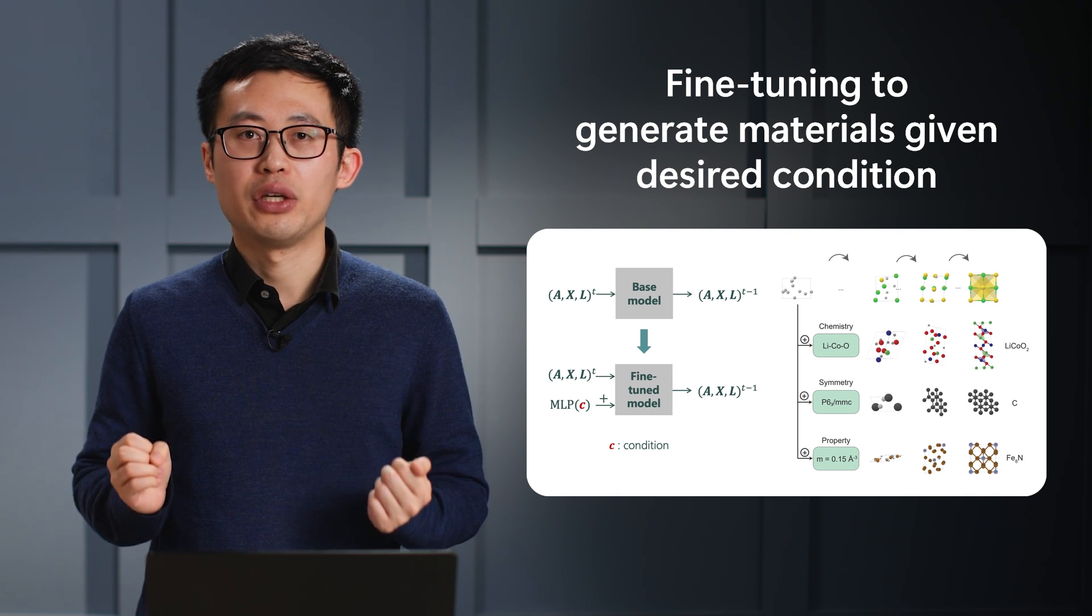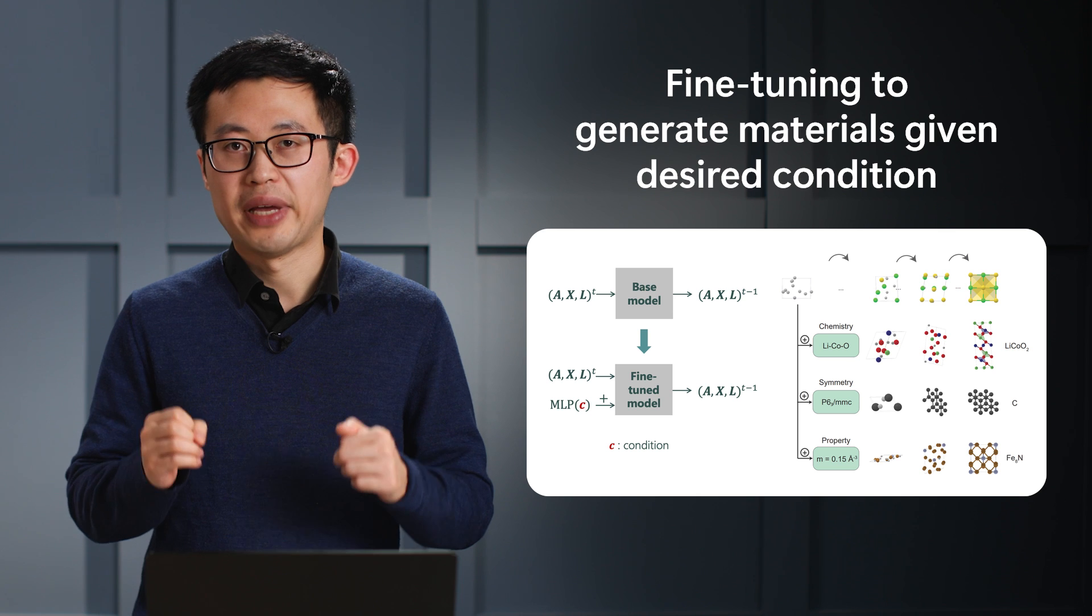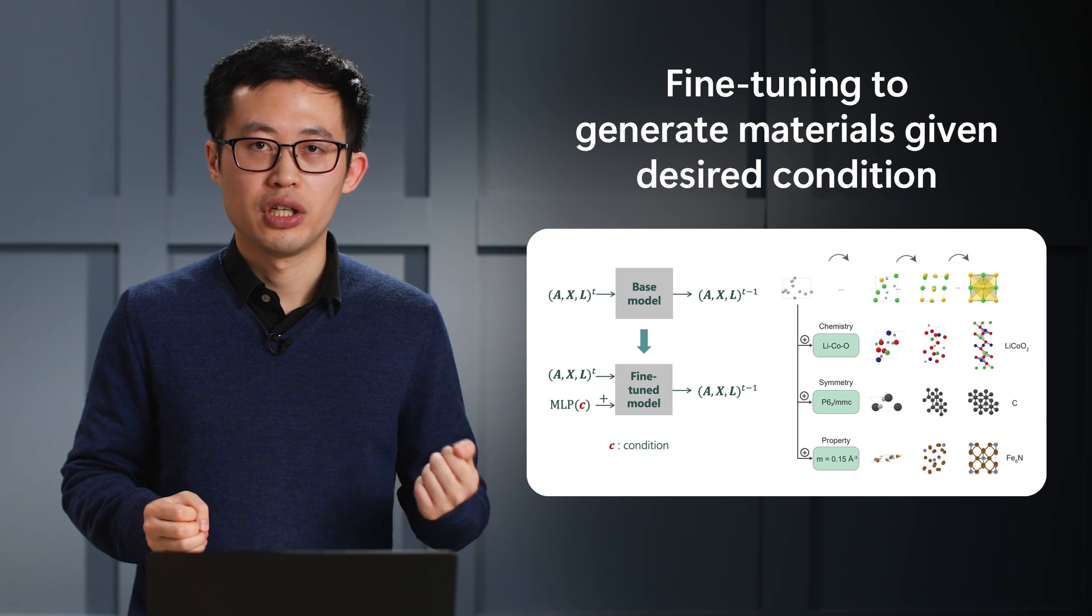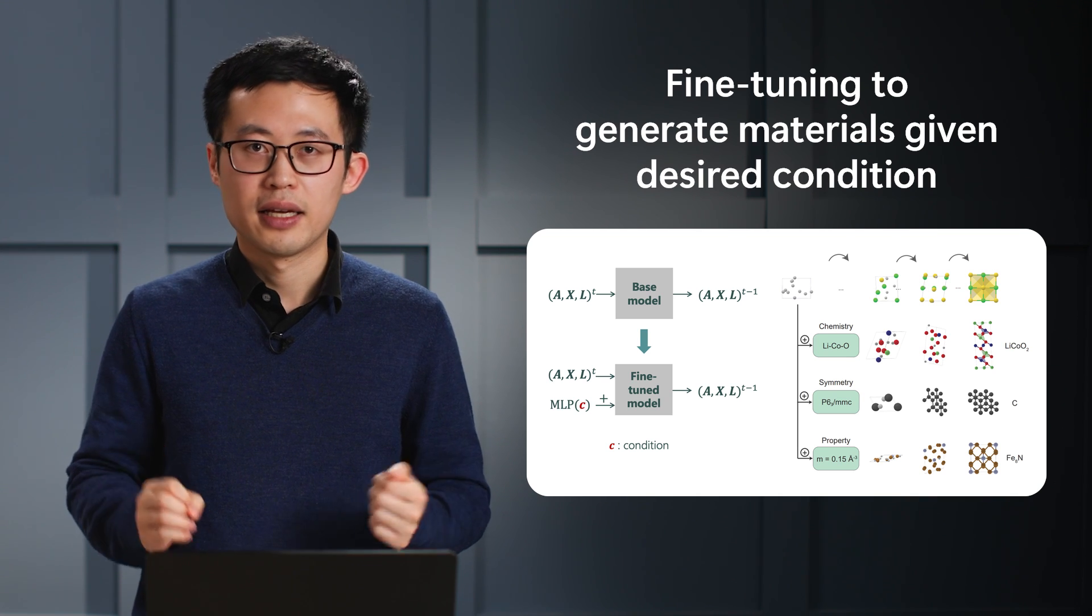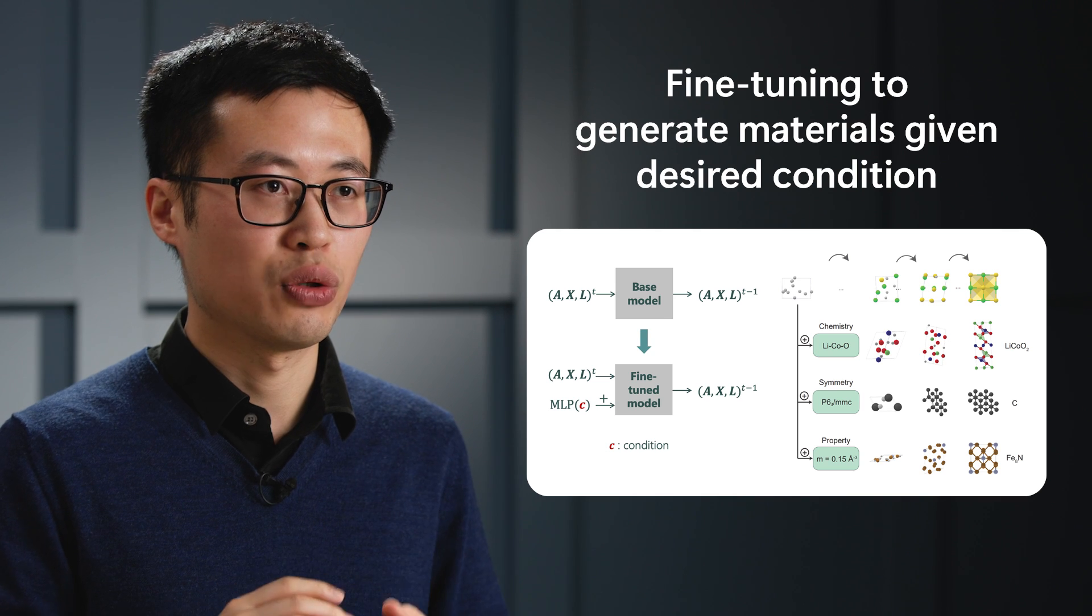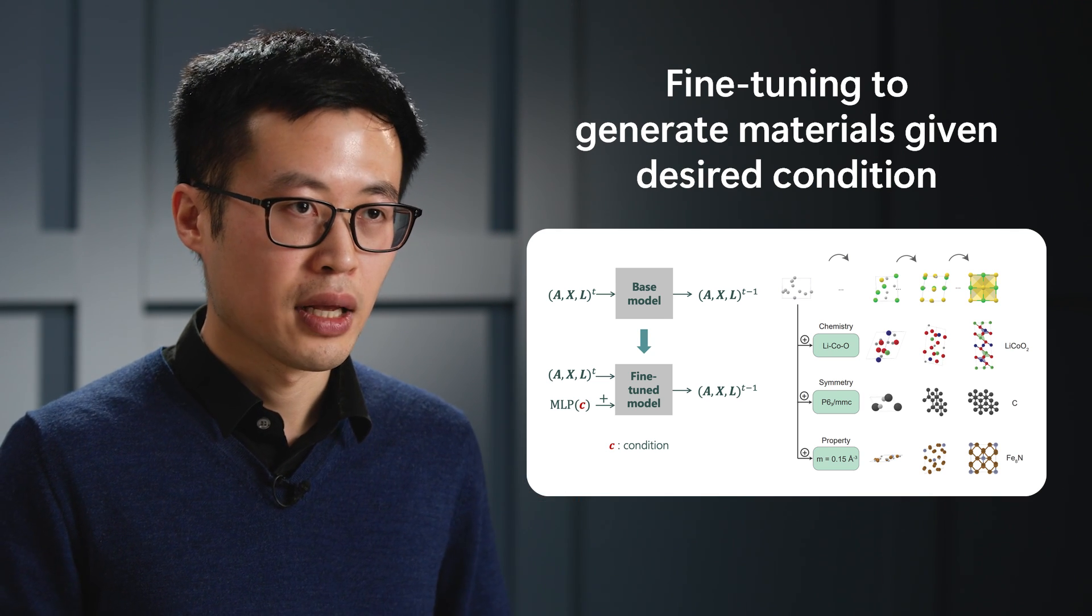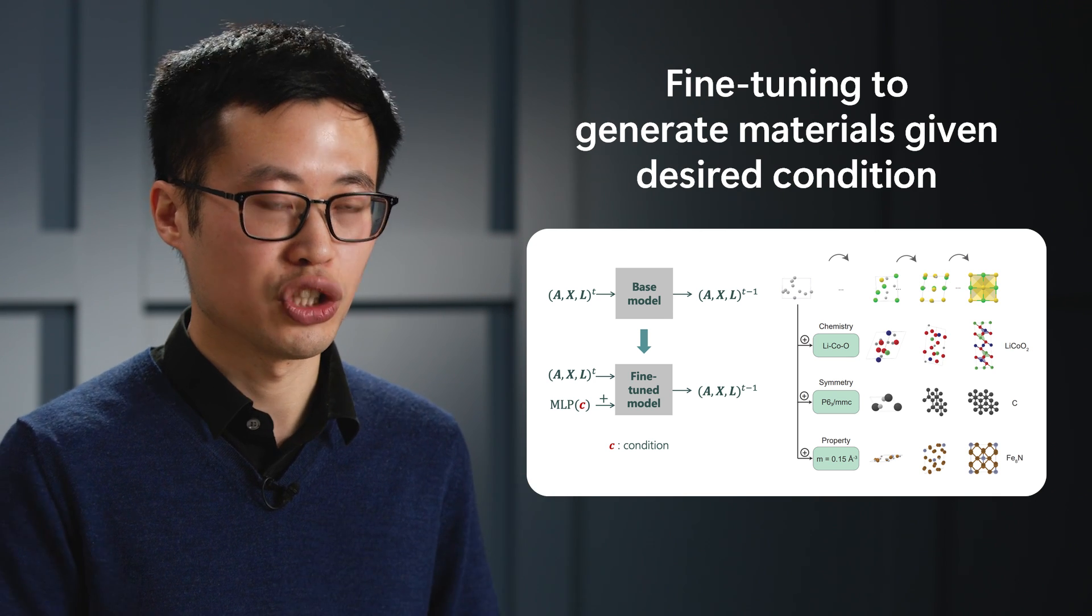To generate the material given desired conditions, we further fine-tune this base model by adding conditions to each layer of the network using a ControlNet-style parameter-efficient fine-tuning approach. The condition can be anything, like a specific chemistry, symmetry, or any target property. Once fine-tuned, the model can directly generate the materials given desired conditions.